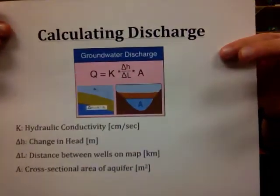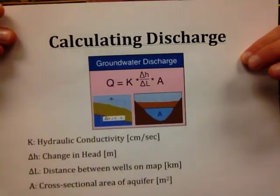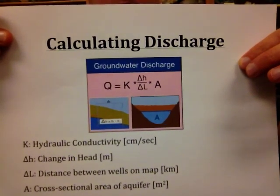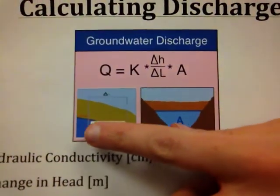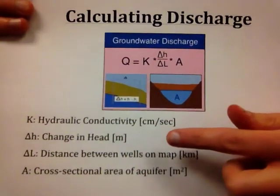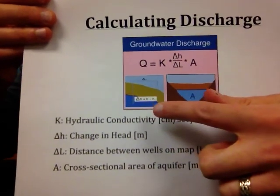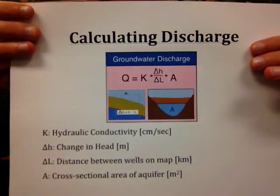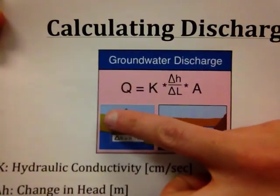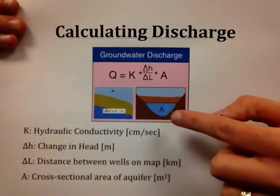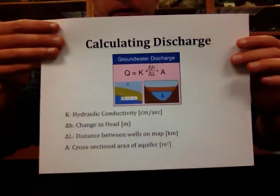Looking at discharge, we have the equation Q — discharge, think quantity — equals K, hydraulic conductivity (often given in centimeters per second), times delta H over delta L, times A. Delta H is the difference in head, measured in meters above sea level: the elevation of the water table at one location minus the elevation at another. Delta L is the map distance between the two wells, and A is the cross-sectional area of the aquifer through which the water is flowing.